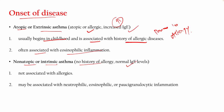Non-atopic or intrinsic asthma has no history of allergy, so it is non-allergic asthma with normal IgE levels. It may be associated with neutrophilic inflammation — there will be an increase in neutrophils, eosinophils, and granulocytic inflammation. This is a phenotype of asthma associated with less refractory, more severe asthma conditions.